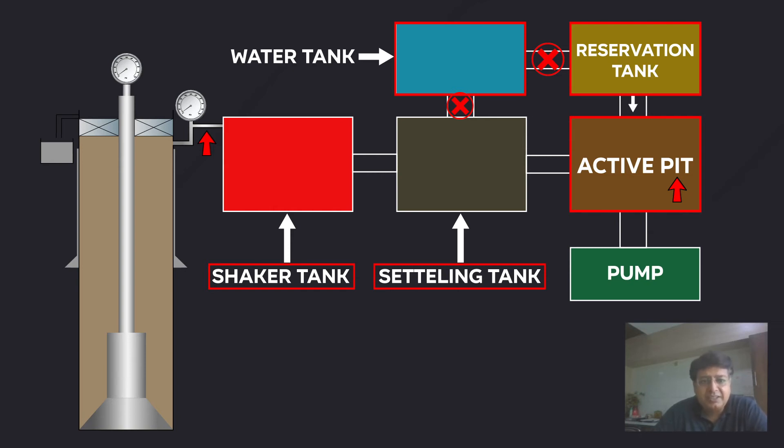In other words, if I draw some fluid or if I take out some fluid from the active tank to the reserve tank, then what happens? The driller will assume that there is a loss in the formation, and again he will take a flow check.